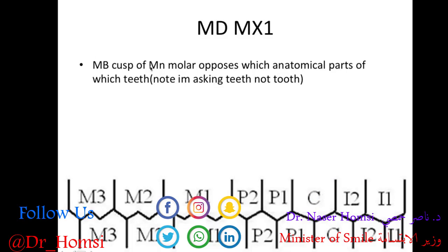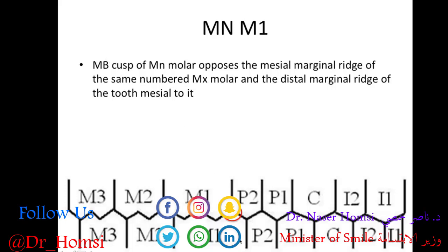The mesial buccal cusp of the mandibular first molar opposes which anatomical parts of which teeth? Note the question asks about teeth — plural. The mesial buccal cusp of the mandibular molar opposes the marginal ridge of the same-numbered maxillary molar (the first molar) and the distal marginal ridge of the tooth mesial to it. This is the kind of language the boards love to use — they won't specifically name the tooth; you have to visualize what's mesial or distal to it.